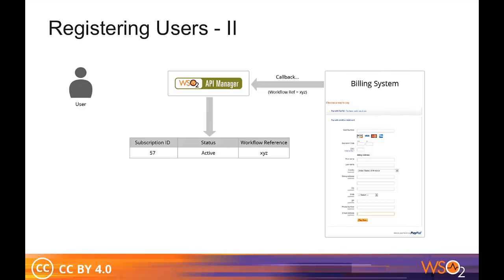The callback endpoint is a secured endpoint, so it needs special privileges to be accessed. You can also enable things like mutual authentication to make sure people outside your billing system cannot access it. This is a one-time step for any given user and will happen only if their account doesn't exist in the billing system. If it does already exist, the subscription will be created in an active state so that they can use it immediately.